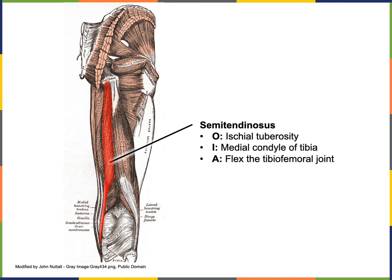The most superficial muscle in the hamstrings on the medial side is semitendinosus. Semitendinosus is both superficial and more narrow than semimembranosus. Semitendinosus has its origin from the ischial tuberosity, and its insertion on the medial condyle of the tibia, to perform the action of flexion at the tibiofemoral joint.